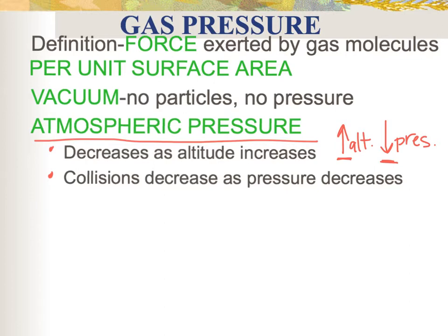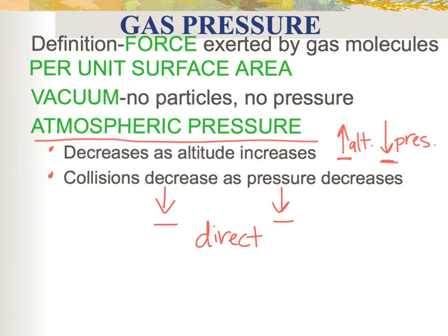Collisions decrease as pressure decreases — so as collisions go down, pressure also goes down. That makes sense: the fewer the collisions, the less pressure you're going to have. Notice both arrows are going in the same direction — this is what we call a direct relationship. If collisions increased, then pressure would also increase.